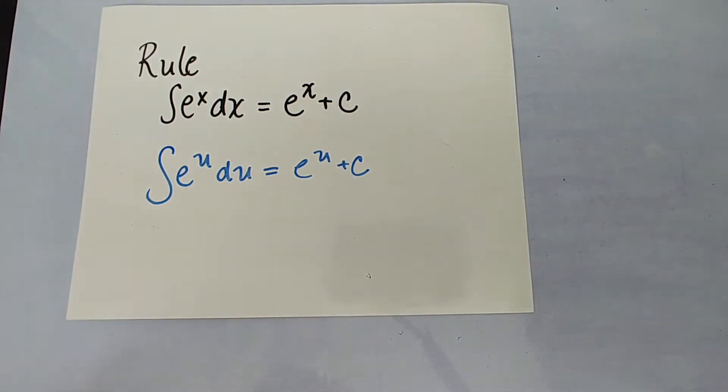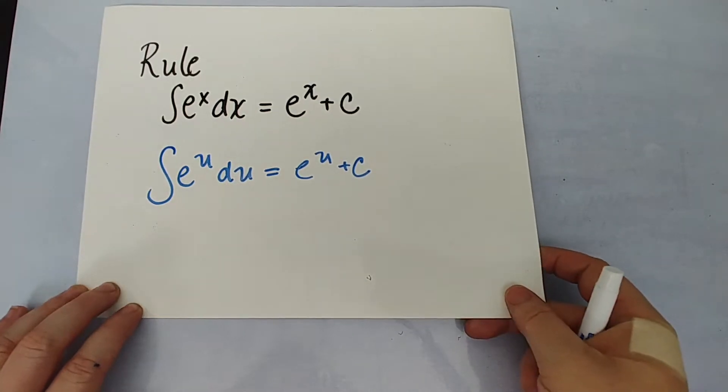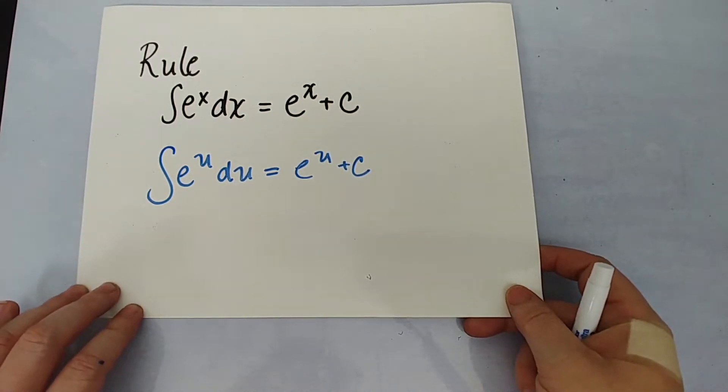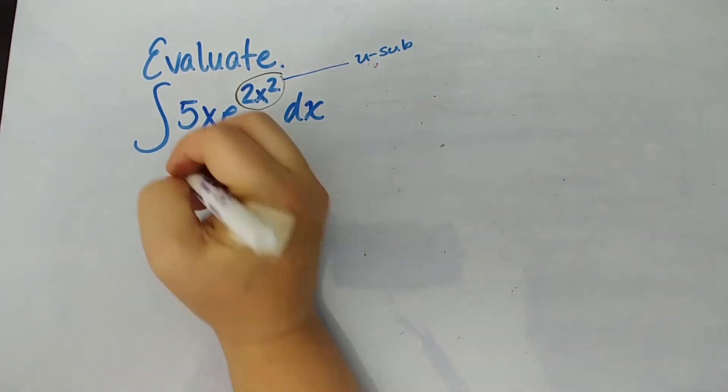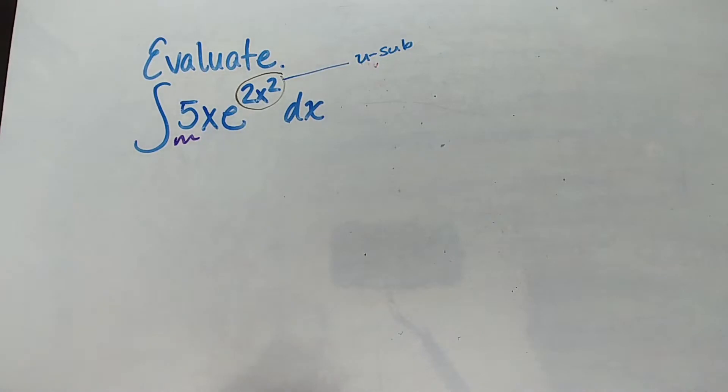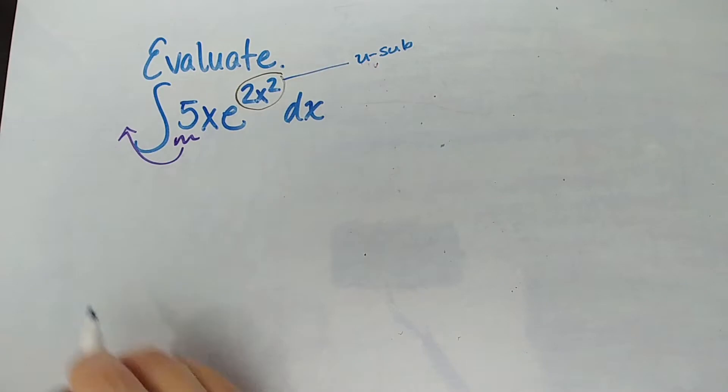So when you see an integral and you've got an e to the ugliness you're going to let that ugliness be u and you're going to use u substitution not parts. Okay and there's going to be a little rewriting involved here. Anytime you see this 5 next to something that's just there to just be one more ugly thing.